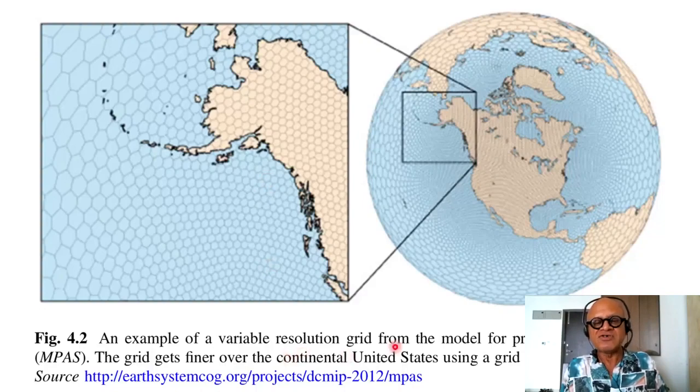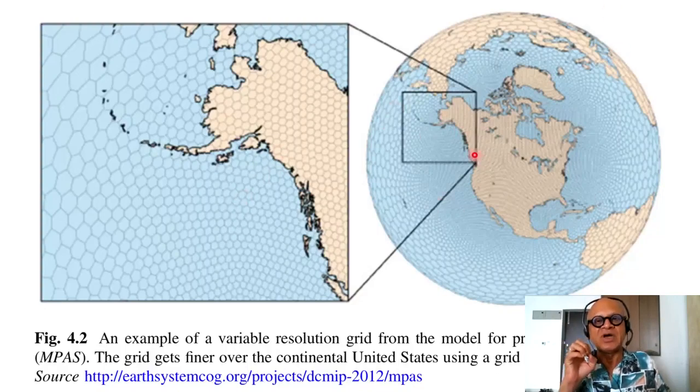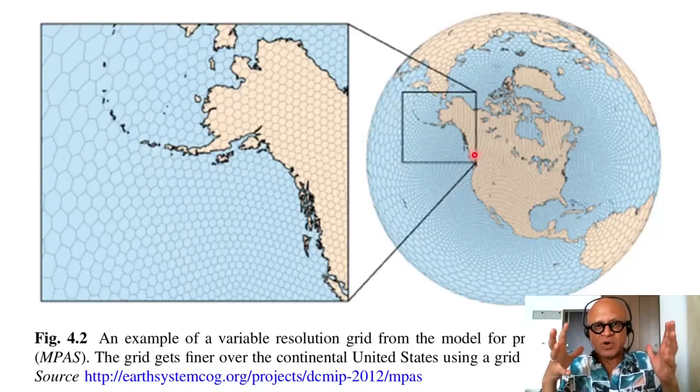Here is an example of a variable resolution grid from the model for prediction across scales, MPAS. Grid gets finer over the continental United States using a grid made up of hexagons. You want to often focus on certain regions, so you are not so worried about what happens out in the middle of the ocean, but you want to predict the weather at a fine scale on the continent. The number of grids determine how much computational time, how much memory is needed.